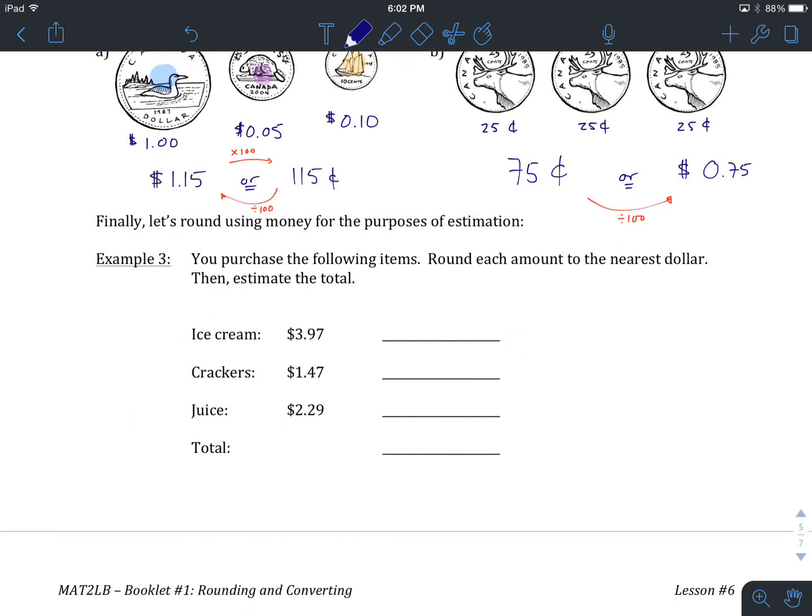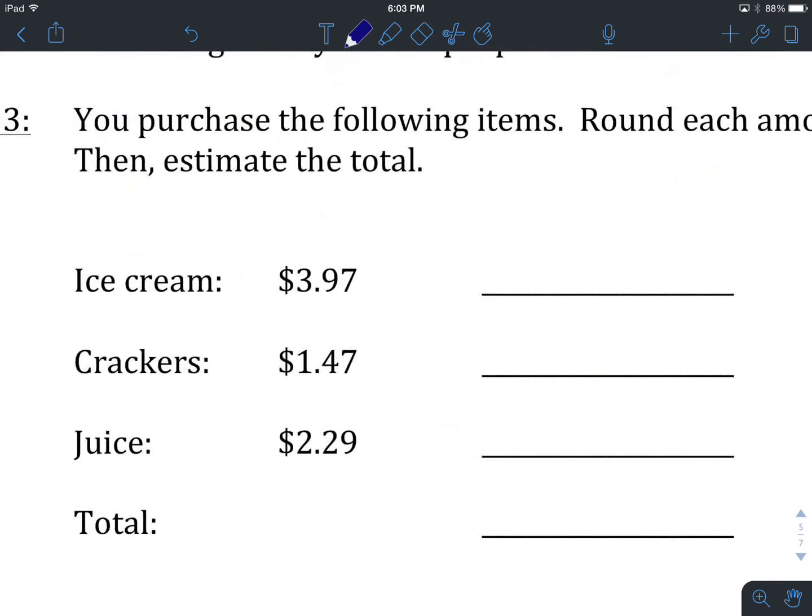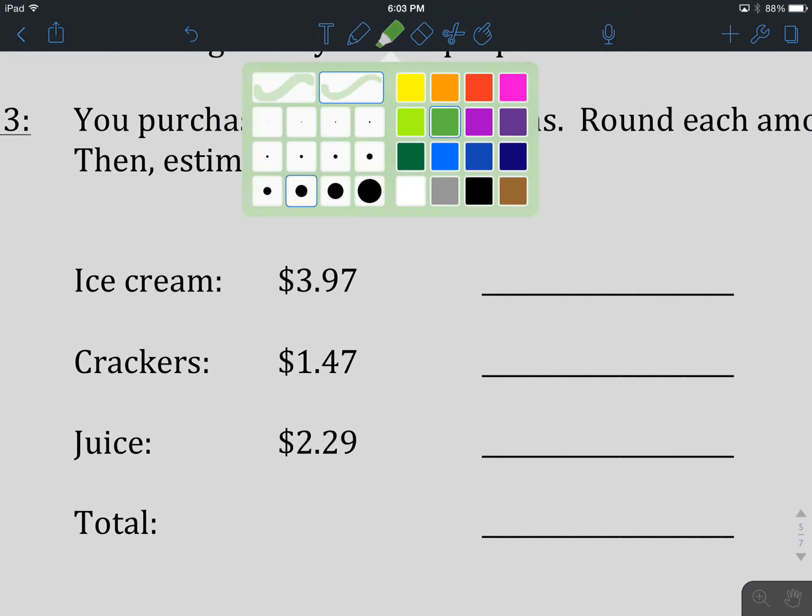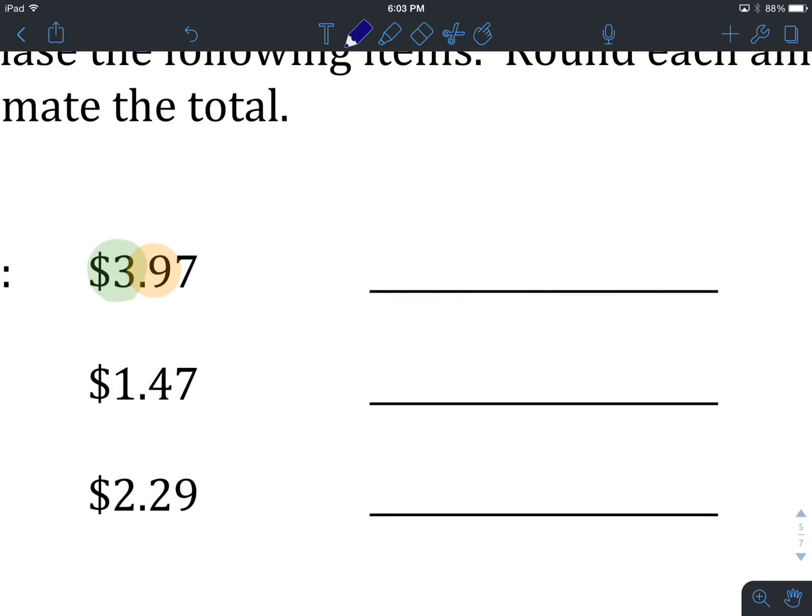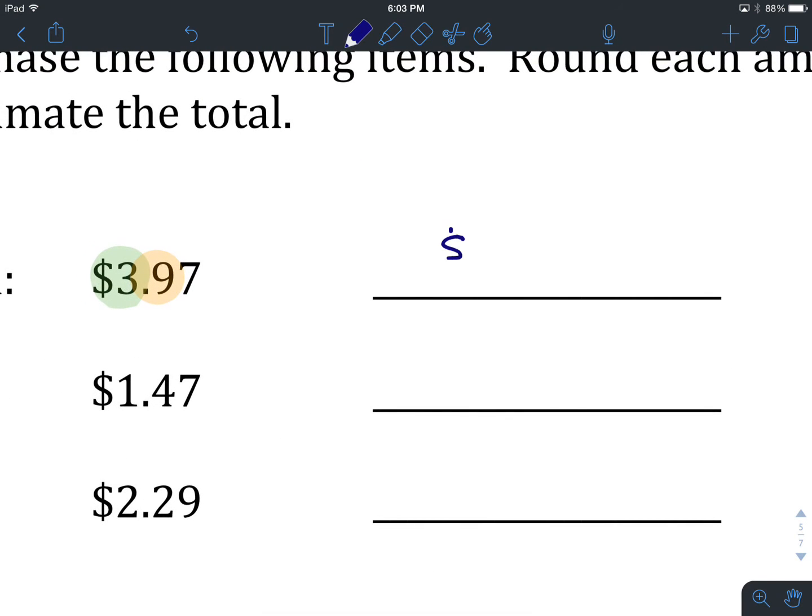Let's start with ice cream. Ice cream is labeled as three dollars and ninety-seven cents, and we are asked to round to the nearest dollar. Here's our dollar place value, one to the left of the decimal. We look to the value one to the right of where we are. We've got a nine, which means we round our three up. Our total here is going to be four dollars.